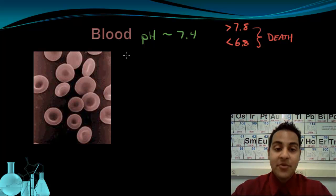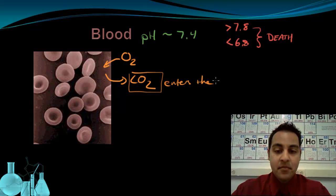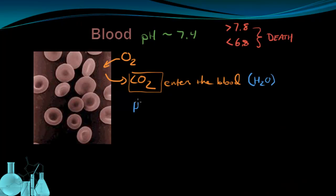But what you may not realize is that every single one of your cells uses oxygen and then gives off carbon dioxide. And this carbon dioxide enters the blood. And your blood contains water. And the water that's present in your blood can react with the carbon dioxide in very small amounts to produce H2CO3 carbonic acid. And as its name implies, carbonic acid is an acid.